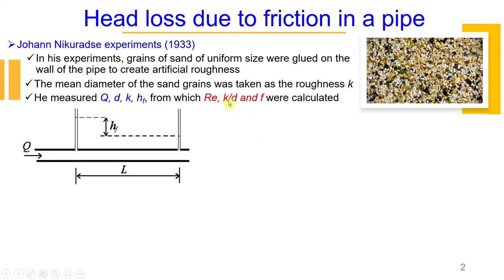And after that, he calculated other parameters such as Reynolds number, relative roughness, and friction factor using Darcy-Weisbach equation. He calculated velocity, mean velocity as flow rate Q divided by cross-section area A, and then he estimated friction factor from Darcy-Weisbach. Just rearranging this equation, you calculate friction factor.